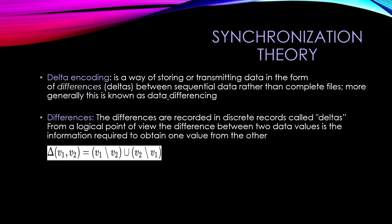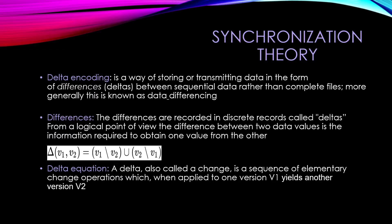This is the equation for the synchronization of deltas. Basically the idea is: if you have version 1 and version 2, what you need to make version 1 equal to version 2 is the little pieces of information that are the difference between each of the versions. So basically the delta equation goes like this: a delta, also called a change, is a sequence of elementary changes or operations which, when applied to one version — in this case version 1 — yields another version, in this case version 2. So basically the idea is that you make two objects the same.